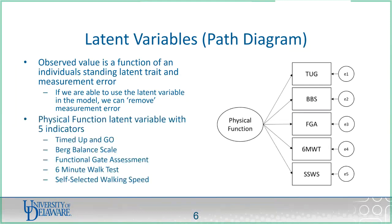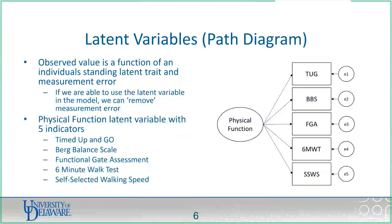In PCA, we typically say the items are creating the component. We flip that thinking in statistical modeling — in SEM, it's always from a hypothesized standpoint. The latent construct is causing or driving the scores on the observed variables. One way to conceptually think about the latent variable is as the true score in classical test theory, where the observed score equals the true score plus error. Here's a PT example: a physical function latent concept made up of five indicators — timed up and go, Berg balance scale, functional gait assessment, six-minute walk, and self-selected walking speed.